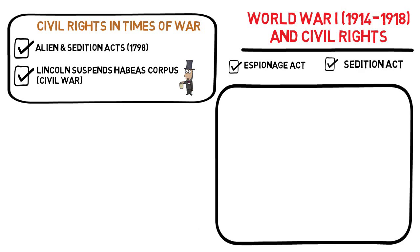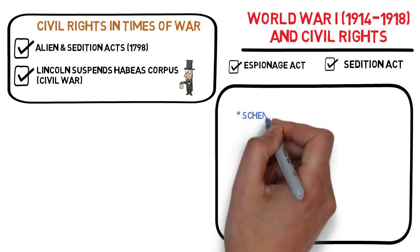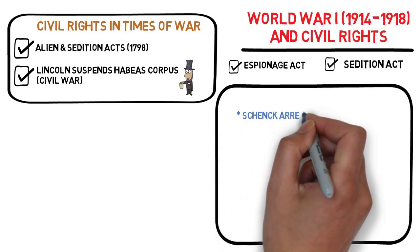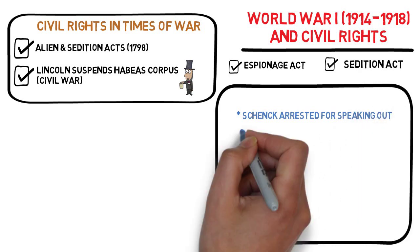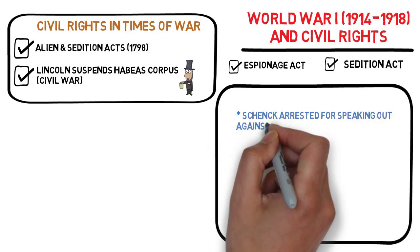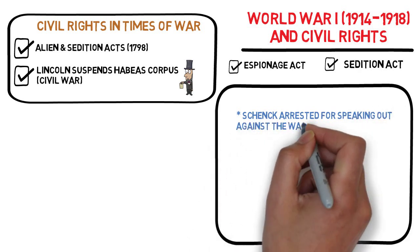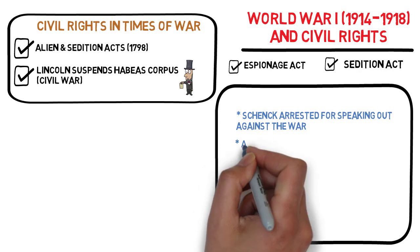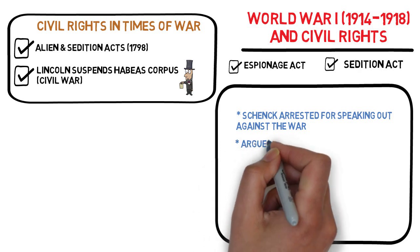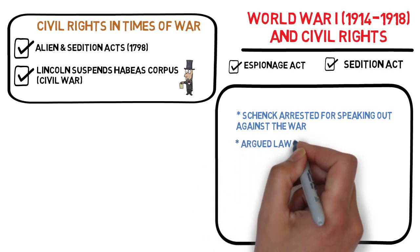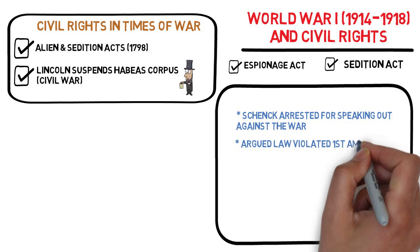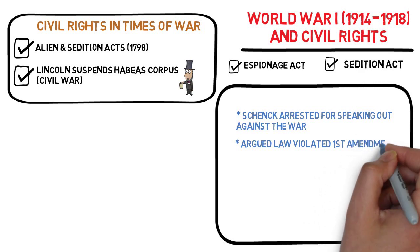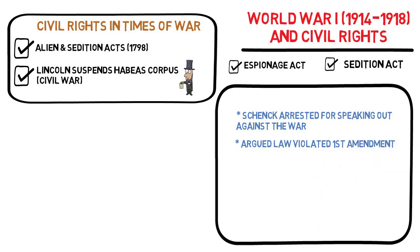Over a thousand Americans were prosecuted under these laws. One of them was an anti-war activist by the name of Charles Schenck, who mailed pamphlets encouraging people to resist the war and resist the draft. Schenck felt that the Espionage Act was an unconstitutional violation of the First Amendment right to free speech.